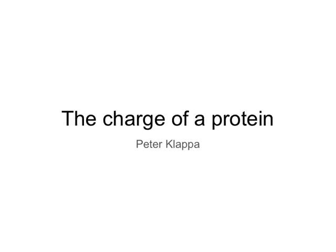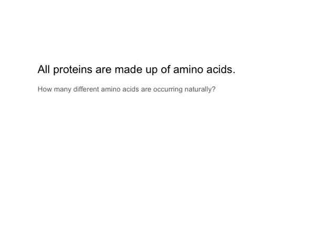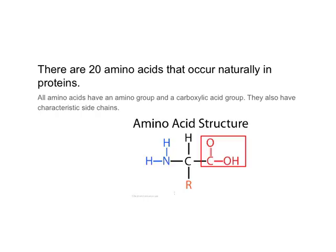In this programmed instruction, I want to discuss the charge of a protein. We know that all proteins are made up of amino acids. How many different amino acids occur naturally? We know about 20 amino acids that occur naturally in proteins.